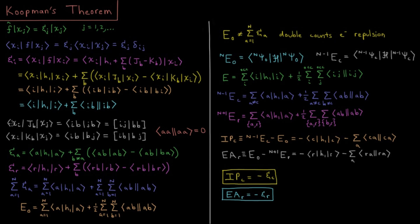For a general matrix element, in physicist notation the Coulomb integral is ⟨ib|jb⟩, which equals the chemist notation integral (ij|bb). In the physicist integral, both complex conjugates appear on the left: χ*_i(1) χ*_b(2) χ_j(1) χ_b(2). In chemist notation, electron one is on the left and electron two on the right: χ*_i(1) χ_j(1) | χ*_b(2) χ_b(2). For exchange, the physicist notation is ⟨ib|bj⟩ and the chemist notation is (ib|bj), where the orbital indices are swapped accordingly. Note also that the antisymmetrized repulsion of a spin orbital with itself is zero, since the Coulomb and exchange parts cancel.